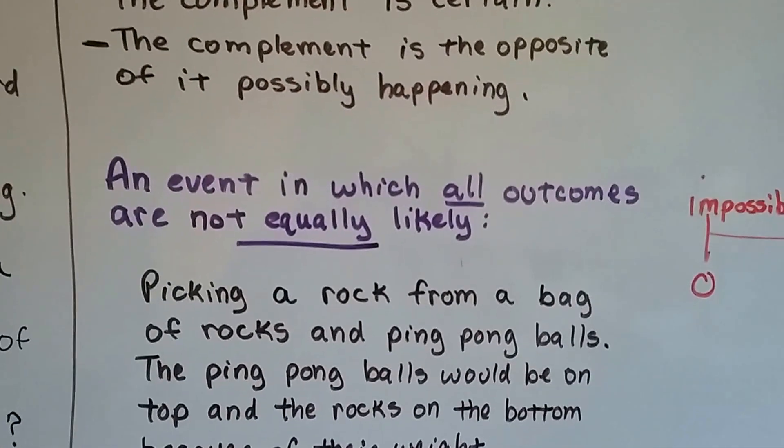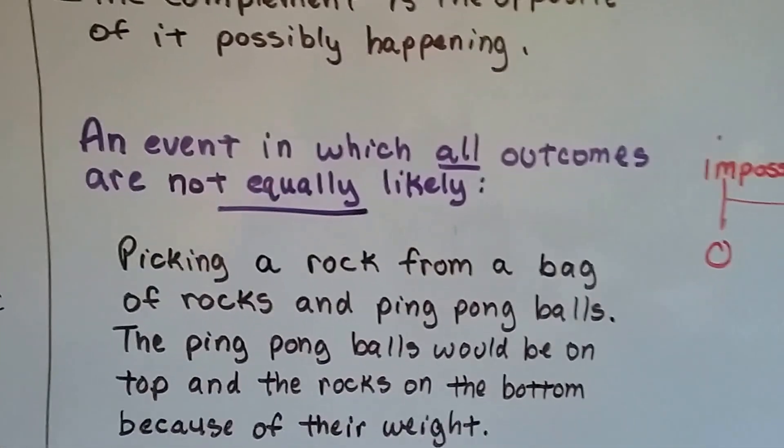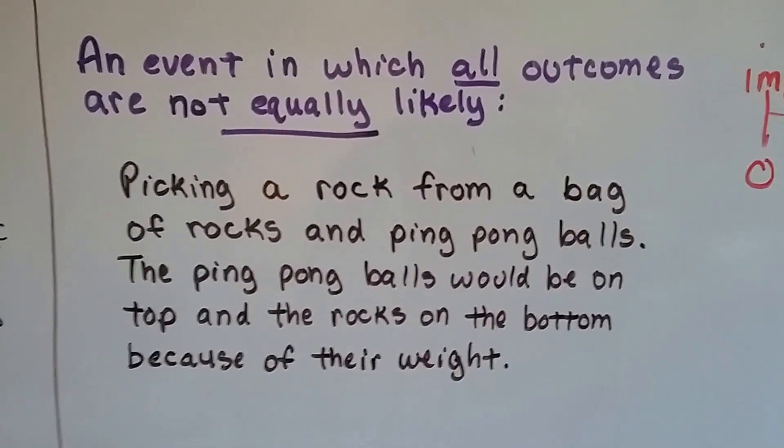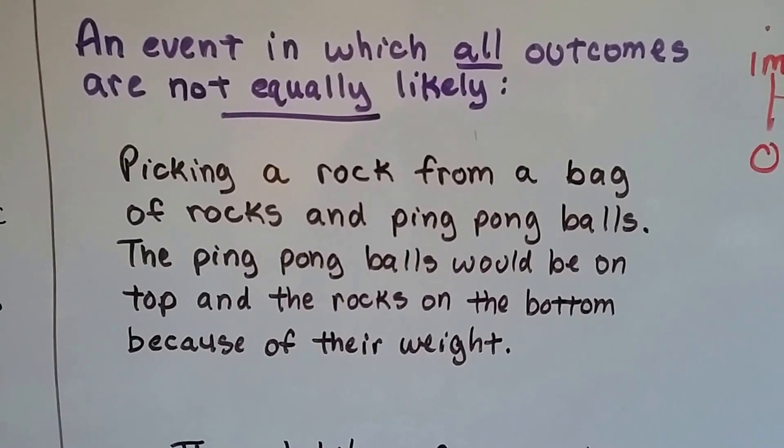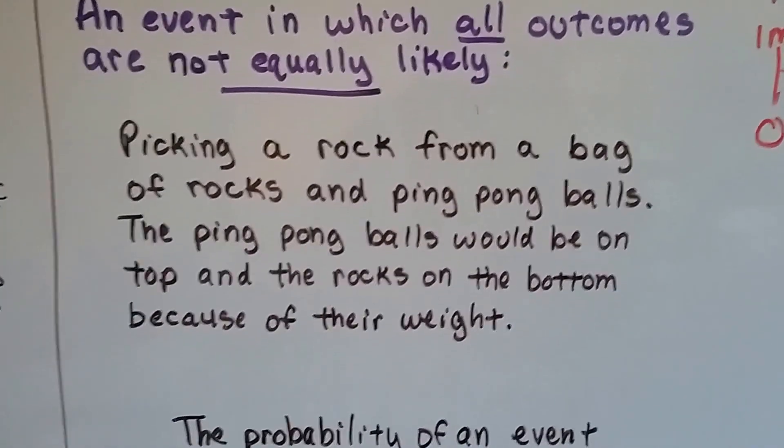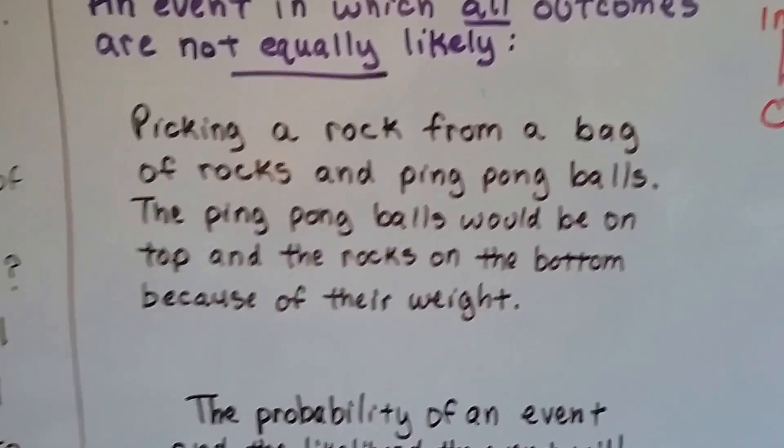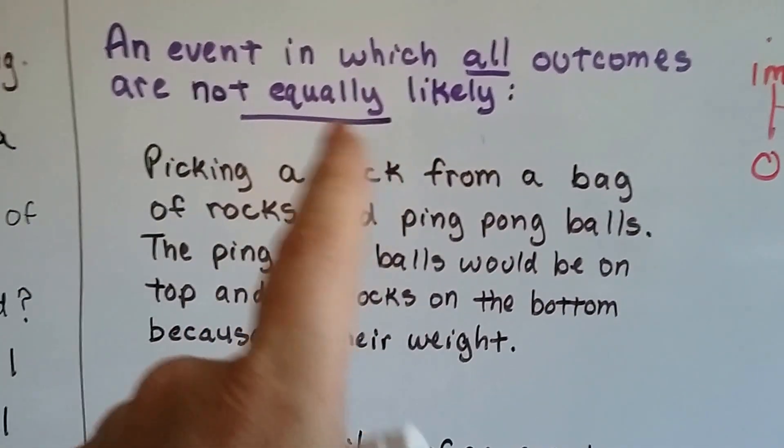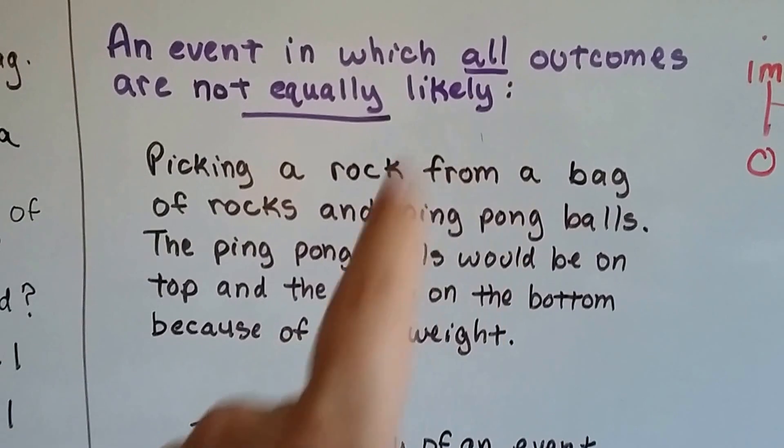An event in which all outcomes are not equally likely would be picking a rock from a bag of rocks and ping-pong balls. The ping-pong balls would be on top and the rocks on the bottom because of their weight. If someone said to pick from the bag real fast, you'd probably pick from the top, so it wouldn't be an equally likely outcome.